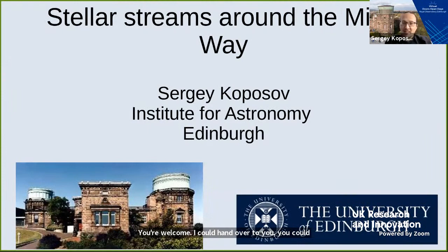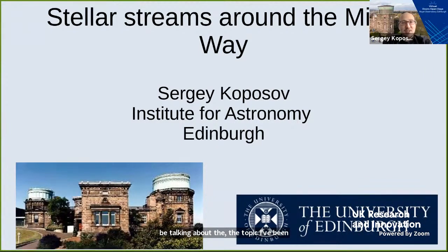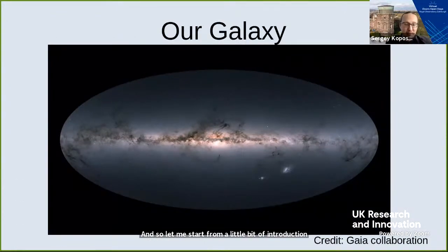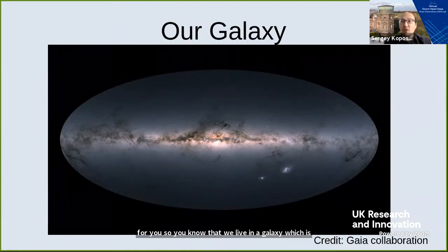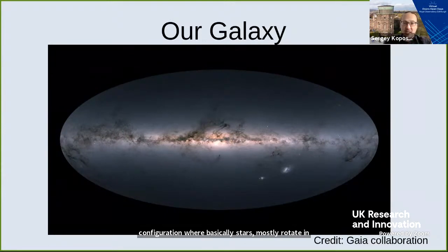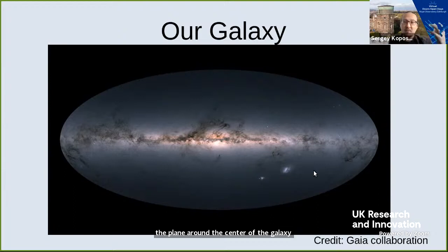Good afternoon, everyone. My name is Sergei Koposov and I am working in the Institute for Astronomy in Edinburgh. Today I'll be talking about a topic I've been working on for the last maybe 10 years or so: the stellar streams around the Milky Way. So let me start from a little bit of introduction. You know that we live in a galaxy, which is a large stellar system that consists of about 100 billion stars. Those stars are mostly arranged in a disk-like configuration where they mostly rotate in the plane around the center of the galaxy.